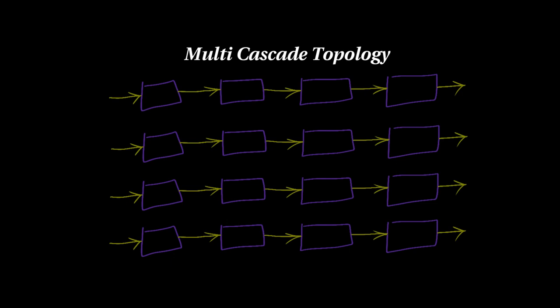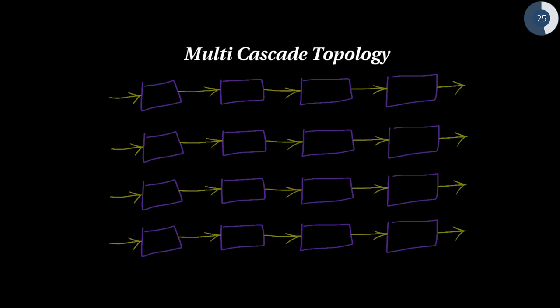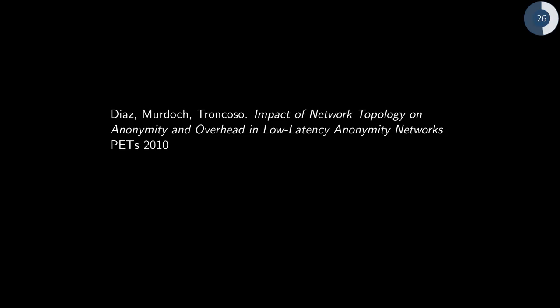This situation here is different because if we choose a cascade and it's not compromised, then for the rest of the week you use that cascade, you win. That's quite different than choosing a new route through the network every single message. The downside is if you select a bad cascade, then you're kind of screwed for the next week. This is a good paper about the network topology. They discuss different trade-offs for entropy and things like that.